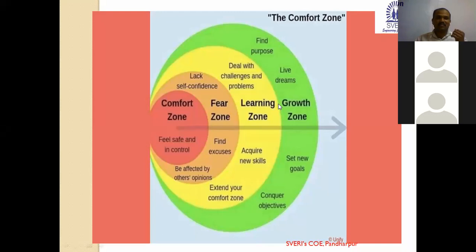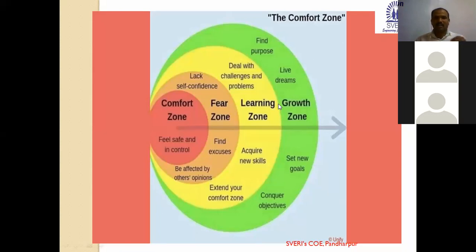The next point from the fear zone is: be affected by others' opinions. As I told you in the first or second lecture — why are we unable to communicate? Because everyone thinks, 'If I talk wrongly, my colleagues and friends will laugh at me.' If I try to communicate in English, my friends will taunt me. So don't be affected by others' opinions.